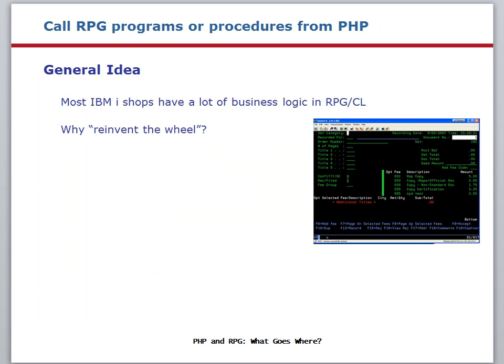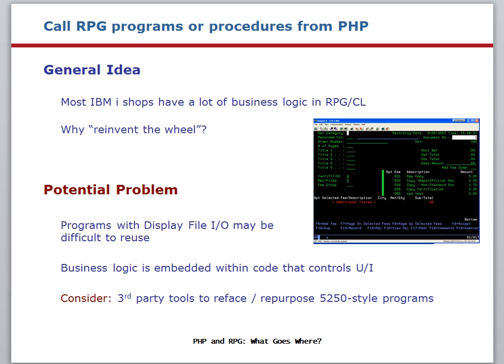Now, what about calling RPG programs or procedures from PHP? Most IBM i shops will have a lot of business logic in their RPG and CL programs. The feeling is, why reinvent the wheel? The problem is the wheel might not fit — it might be like trying to put a car tire on a bicycle. Programs that include a workstation file and use display file I/O operations might be very difficult to reuse within a PHP application. The reason is that the business logic, which you really want to use, might be very tightly bound up with the code that drives the user interface. If you have a lot of 5250-style programs that you want to web-enable, you may want to consider using one of the third-party tools that reface and repurpose that type of code. Although it is certainly an interesting programming task to convert a green screen application to another environment, you need to be sure that's the best use of your time before you start the task.